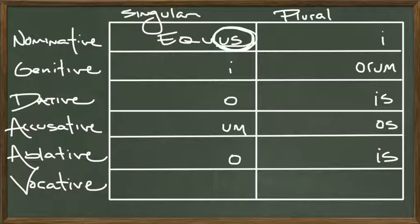But what does it all mean? Well, equus means horse. In the genitive, we would drop the us, which people all over the world are happy to do. Drop the us and replace it with an i, and we would have equi.